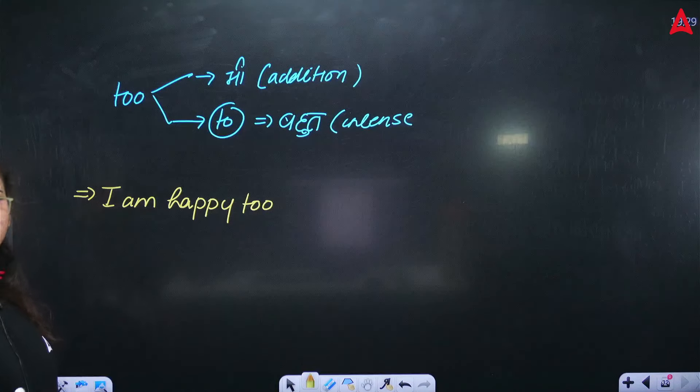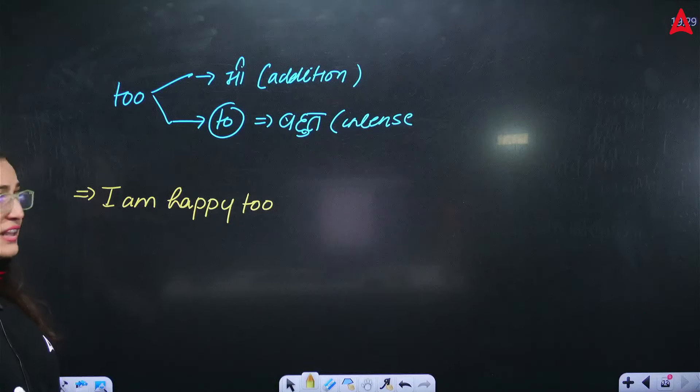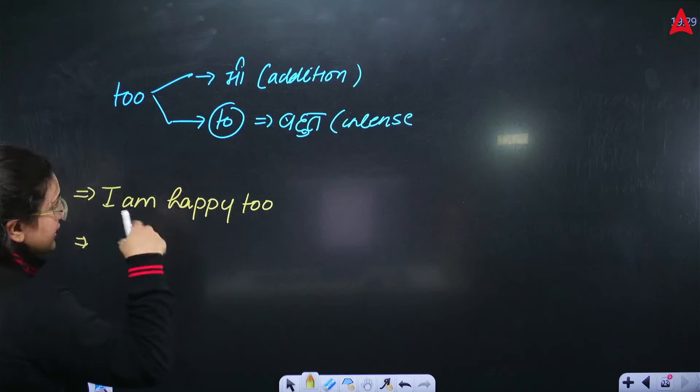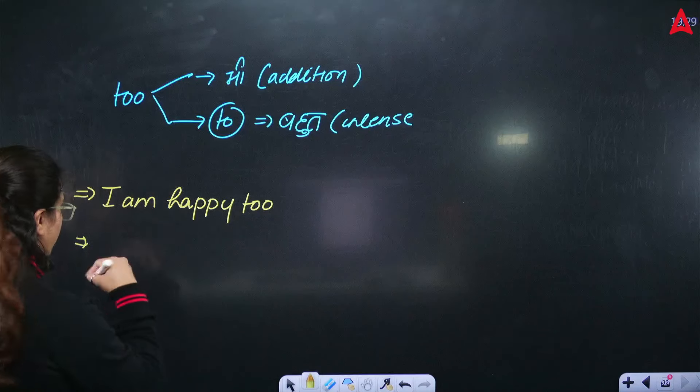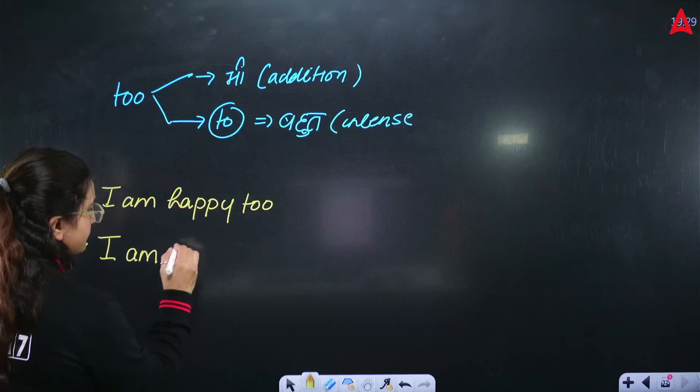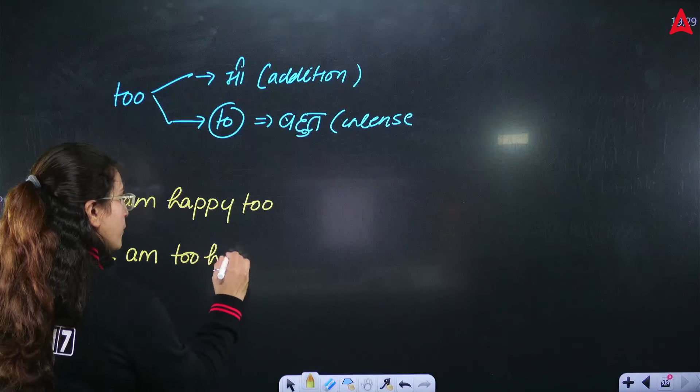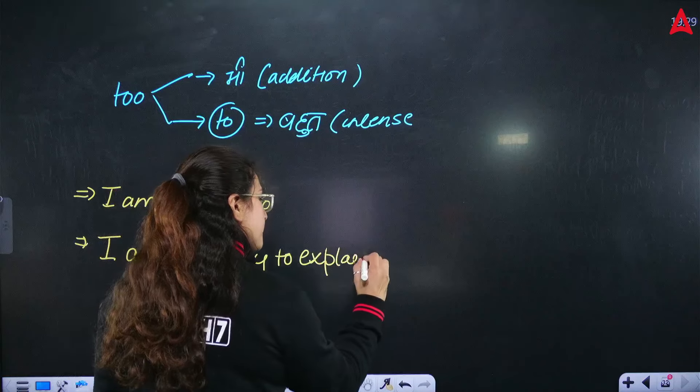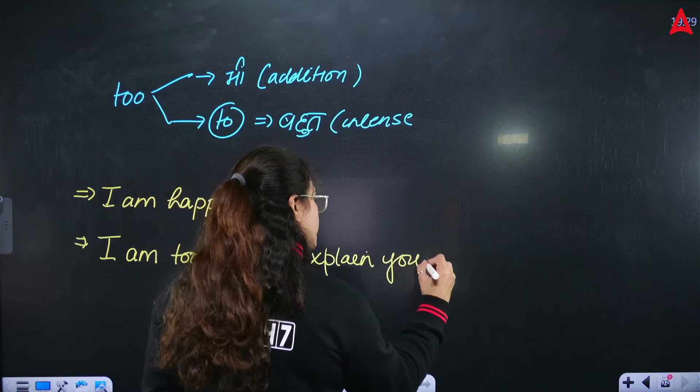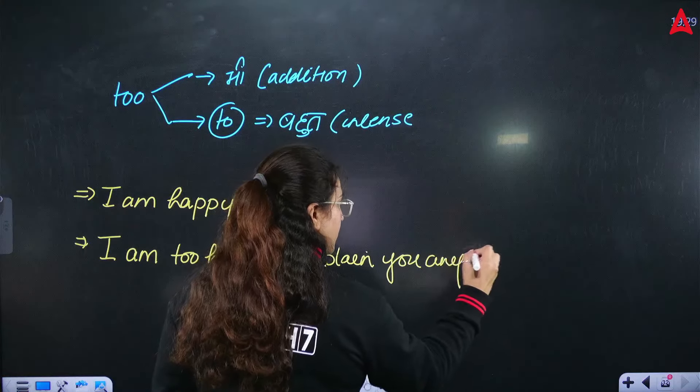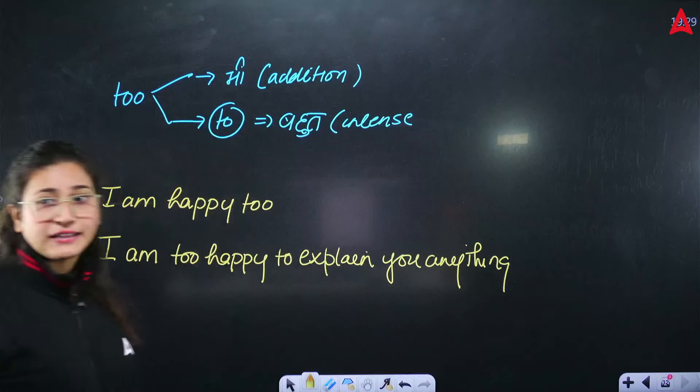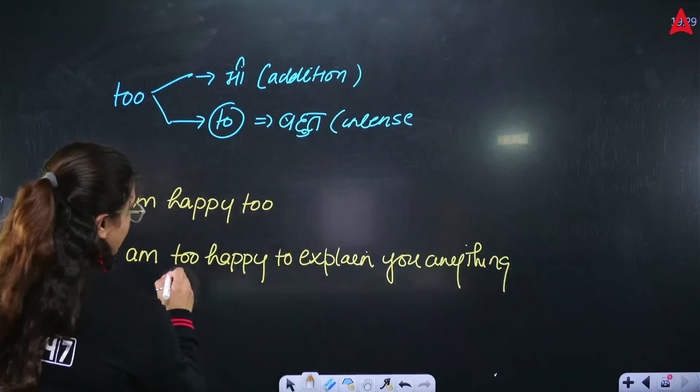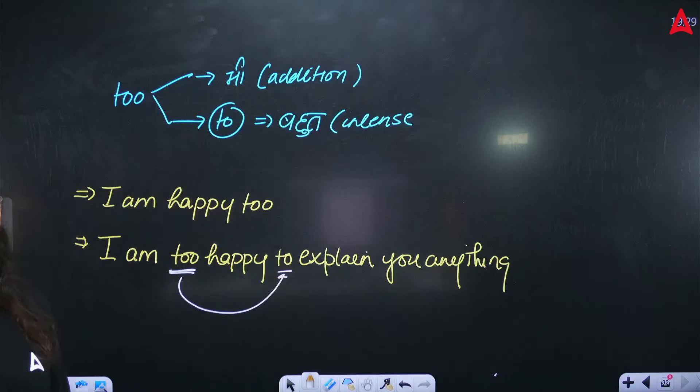Then, too. I am too happy to explain you anything. I am very happy to explain you something to you. So, I am going to say, intensify with the help of two and too.